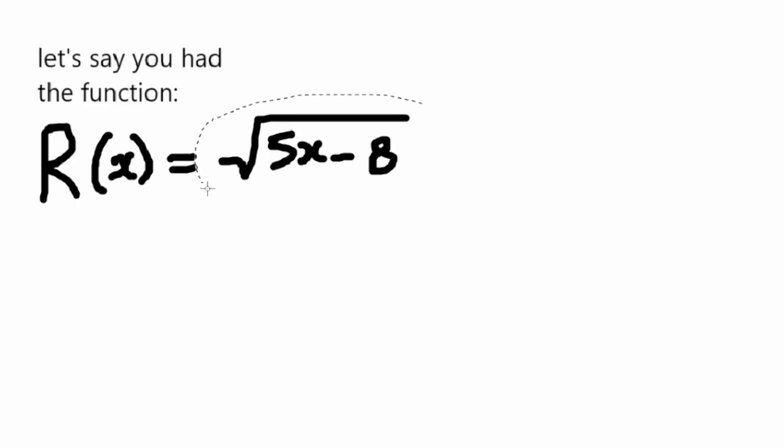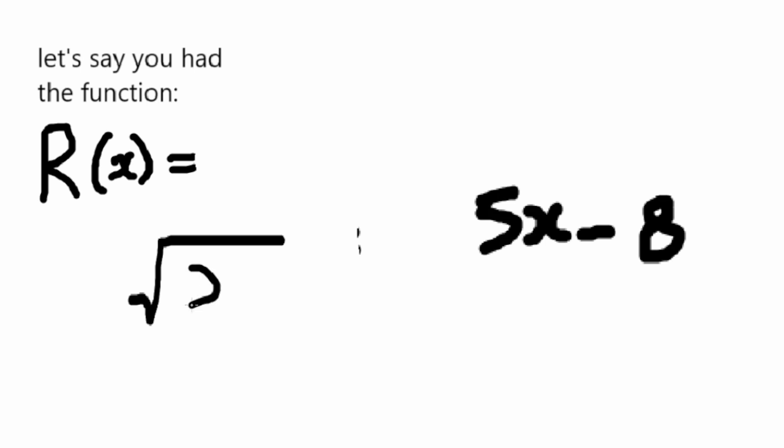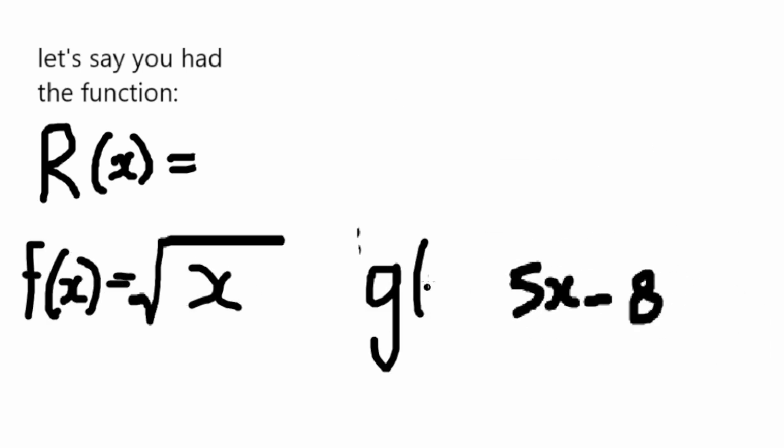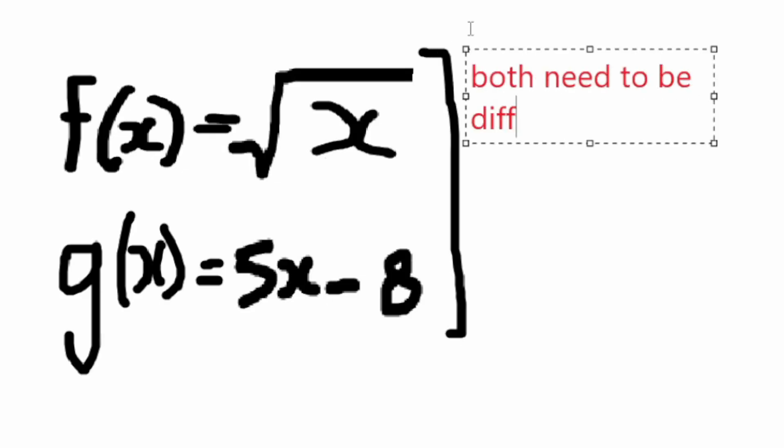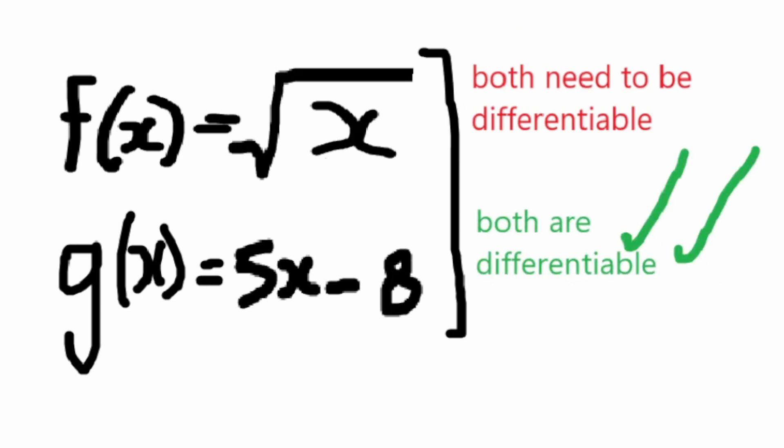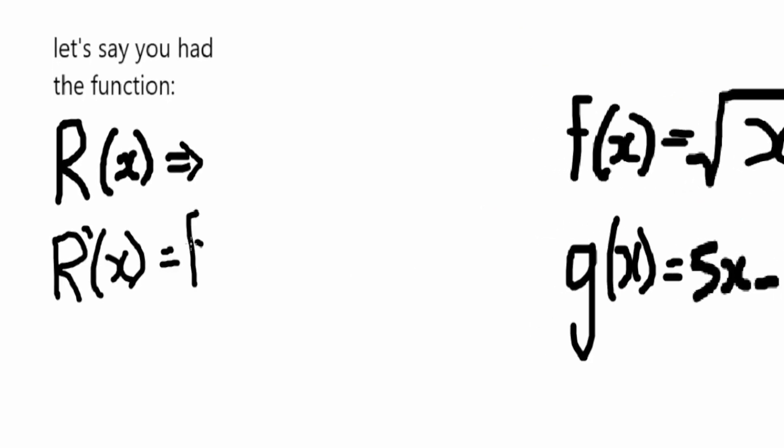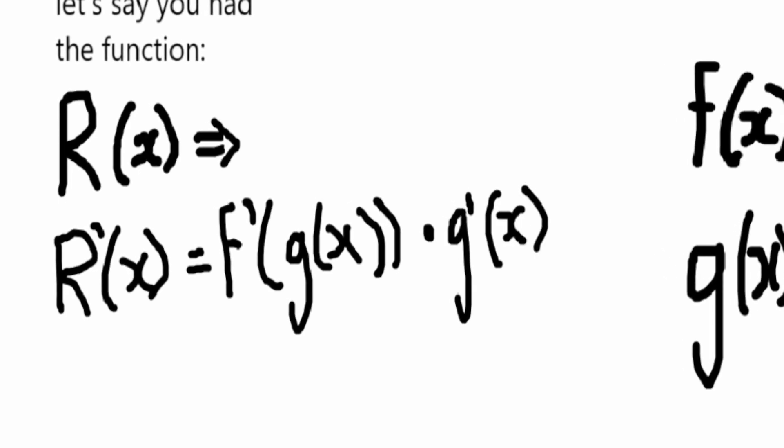The expression square root of 5x minus 8 is actually made up of two functions. One that square roots it, which we can say is f of x equal to square root of x, and the other is the 5x minus 8, which we can label as g of x. Now, the chain rule only works if both functions are differentiable. And if they are, which they are in this case, then r prime of x equals f prime of g of x times g prime of x.